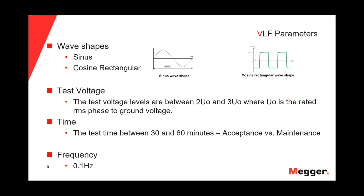On the other hand, if we are doing a maintenance test on a cable that has been in service for 20 years, we have a risk of wire trees. We know that wire trees grow very slowly, so we will need more time to convert and propagate the wire trees. For that reason, we need to extend the test time to 60 minutes.